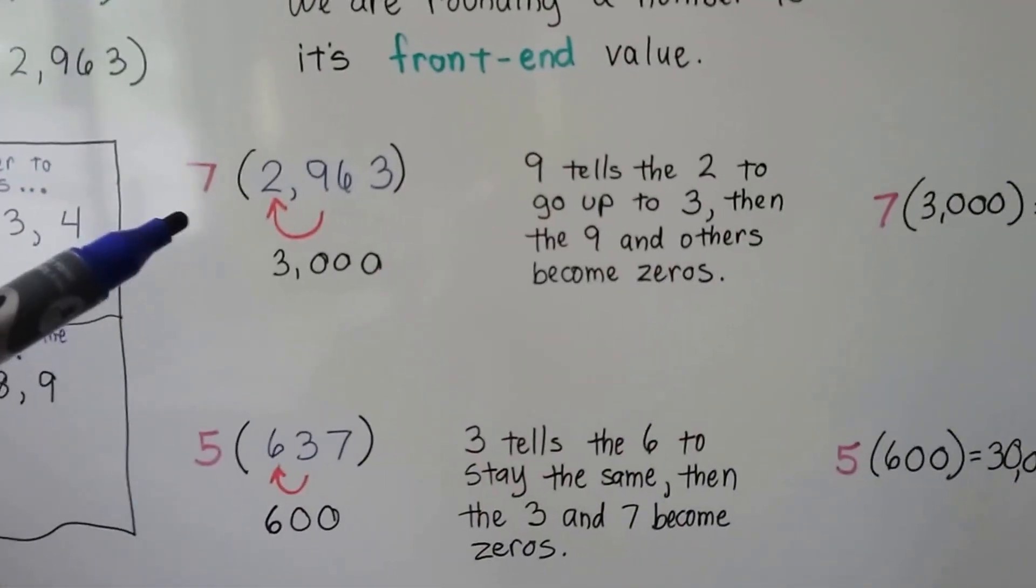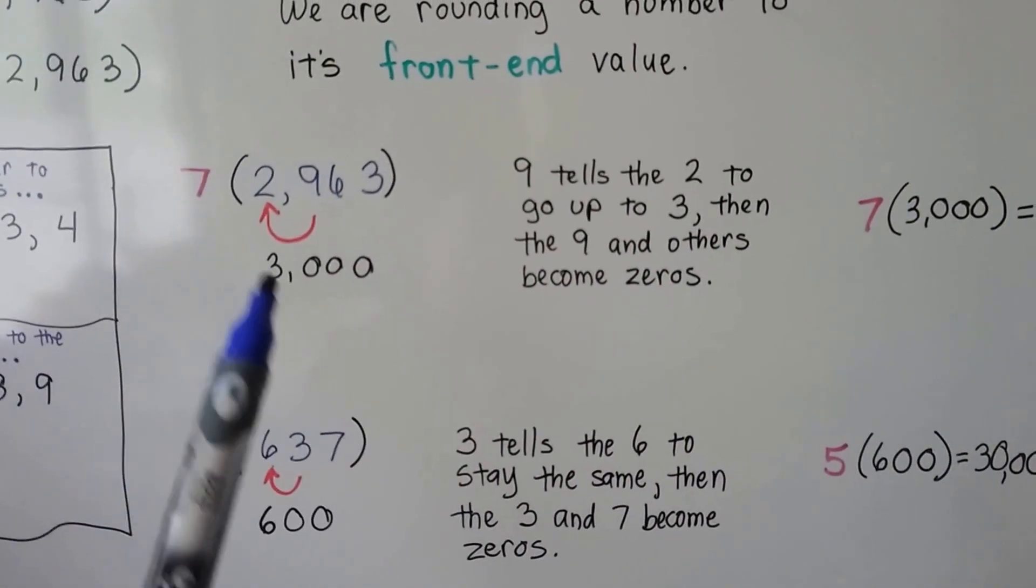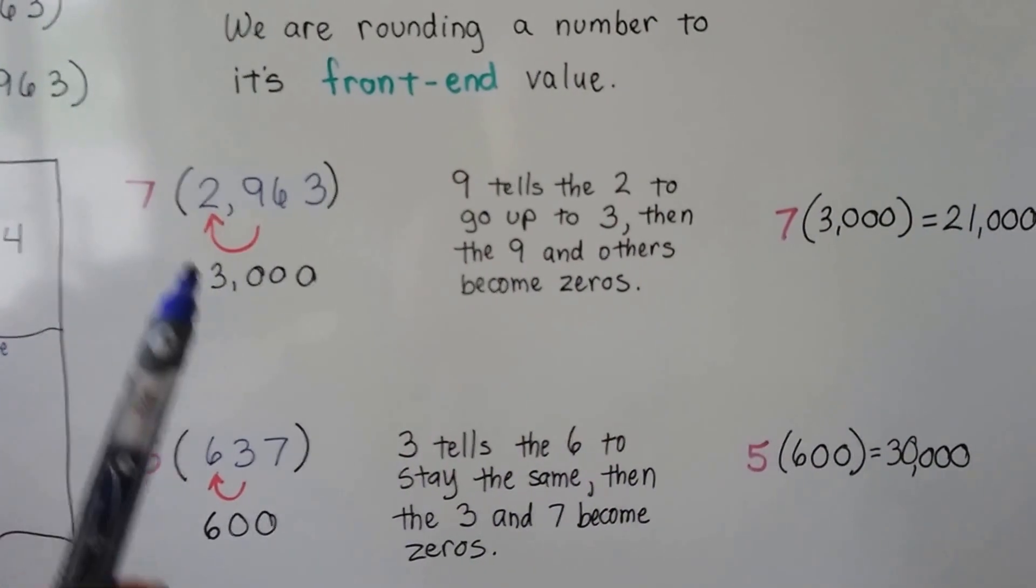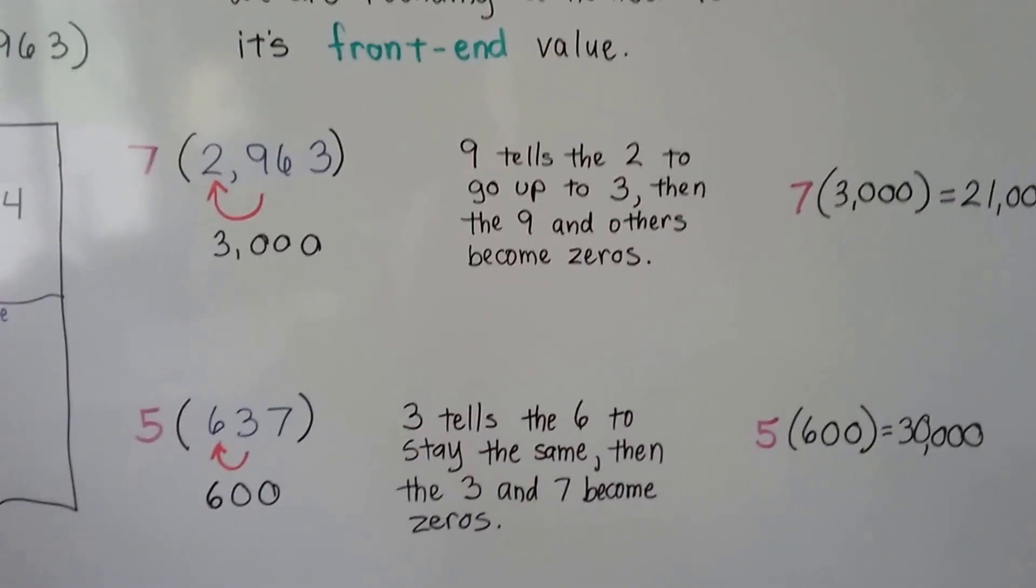So 7 times 2,963, that 9 tells the 2 to go up to 3. And then the 9 and the others become zeros. So we have 7 times 3,000, which is 21,000. Isn't that great for estimating?